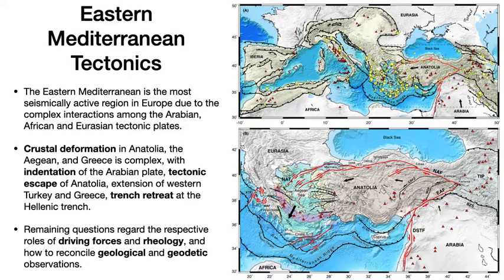The Eastern Mediterranean exhibits active tectonics characterized by the subduction of the African lithosphere along the Mediterranean Ridge, latitudinal extension across the Aegean, lateral extrusion of Anatolia along the North Anatolian Fault, and northward tectonic indentation of Arabia along the Dead Sea Fault.